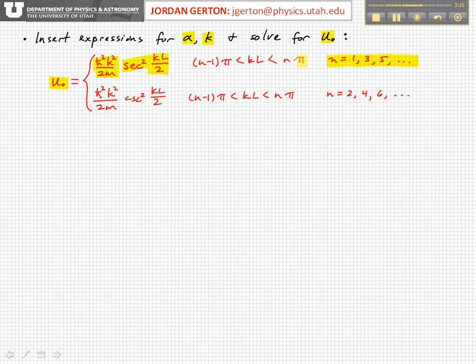So if n equals 1, we're talking about this solution is valid, or this equation is valid from 0 to pi, when kL is between 0 and pi. If n equals 3, then it's between 2 pi and 3 pi, etc.